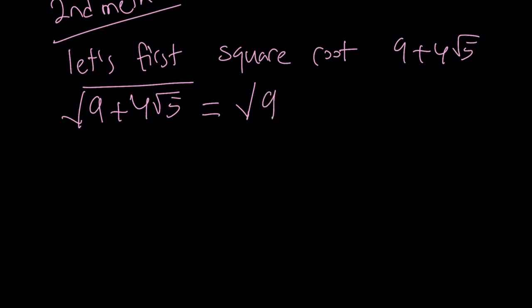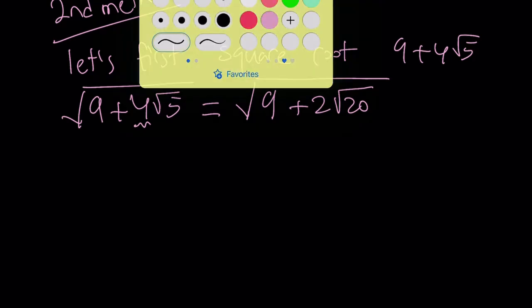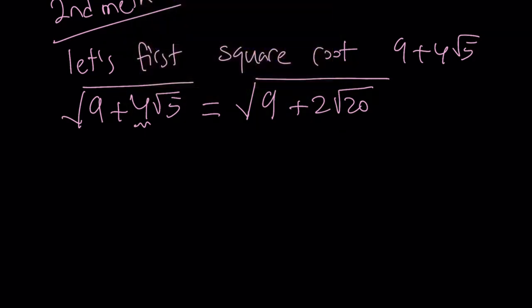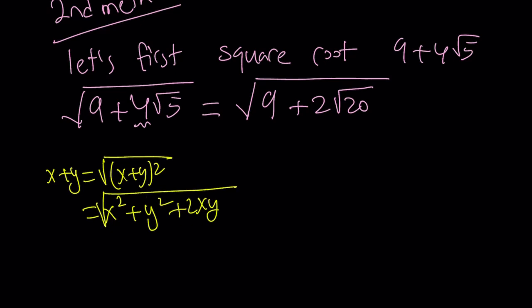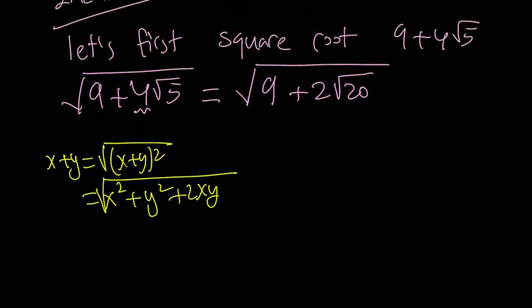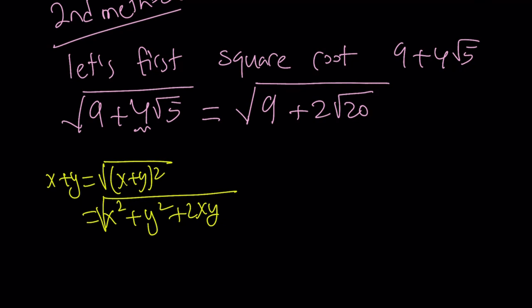First of all, I want to turn this 4 into a 2. Go ahead and put the 2 inside, and you can write this now as 2 times the square root of 20 because 2 root 5 is root 20. Now I want to set my expression equal to something like this. I want to have x plus y, but I want to have it in this form: the square root of x plus y quantity squared. That can be written as x squared plus y squared plus 2xy. That's why it is important to have a 2 in the front. Obviously, everything is positive, so we don't have to deal with absolute values.